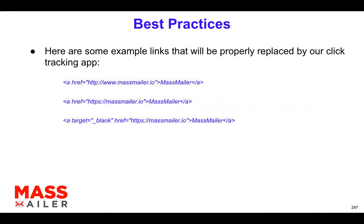Some links that are properly formatted — again, if you're using custom HTML this would apply. If you're using the MassMailer template builder, you want to make sure that href is defined properly with http or https, and you need to have that colon forward slash forward slash, plus whatever link you're embedding. If you have other properties like target equals to blank, that's fine — that's not a problem. But for href, make sure you don't have spaces around the equals-to symbol, and that http or https is included within quotes.